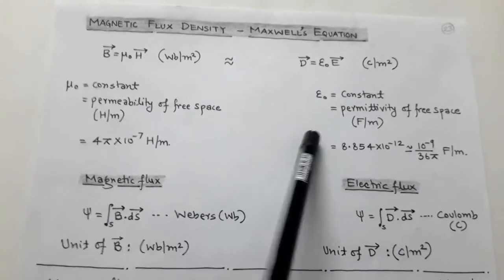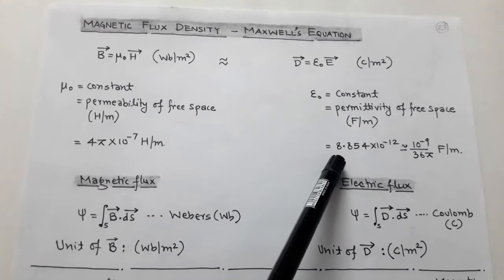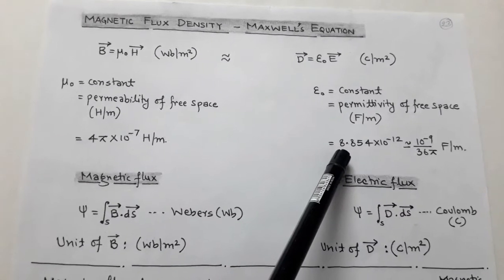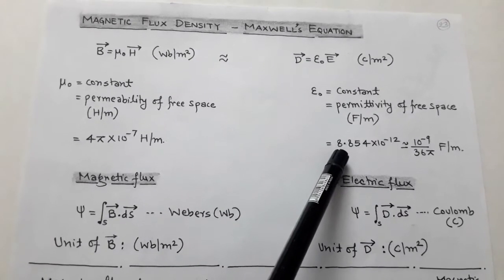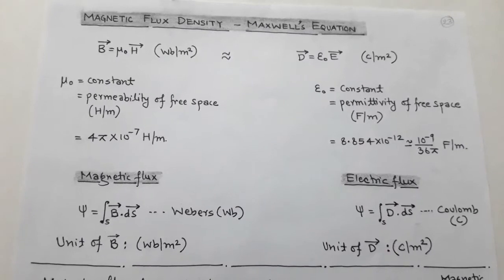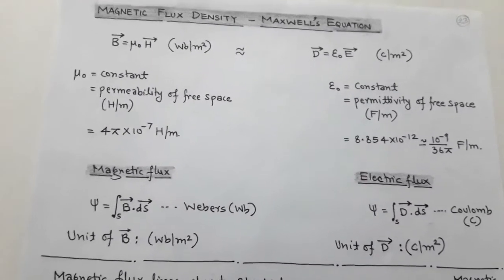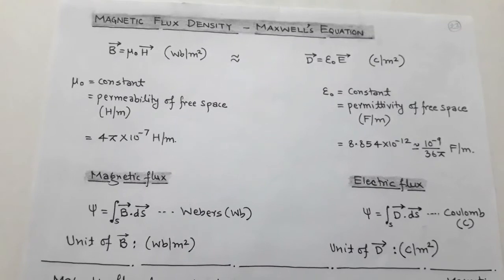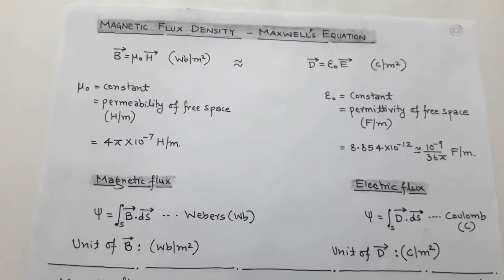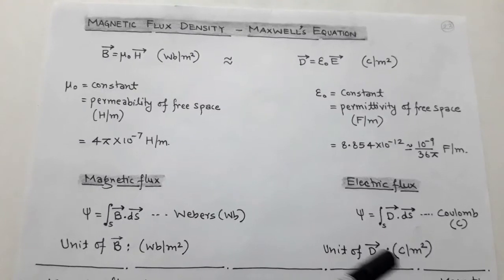Just like ε₀, whose value is 8.854 × 10⁻¹² or approximately 10⁻⁹ / 36π farad per meter, we take the permeability of free space μ₀ as 4π × 10⁻⁷ henry per meter.